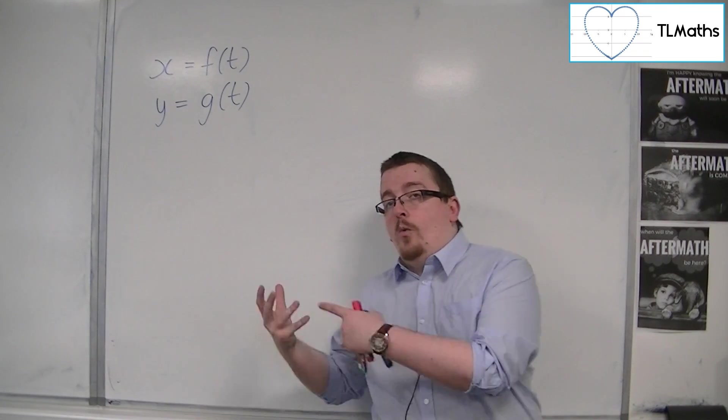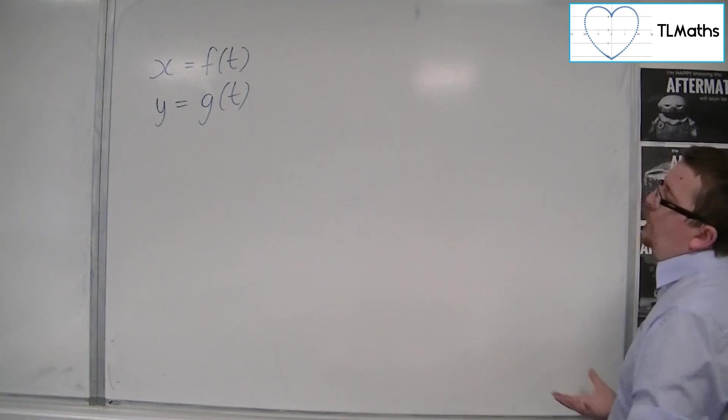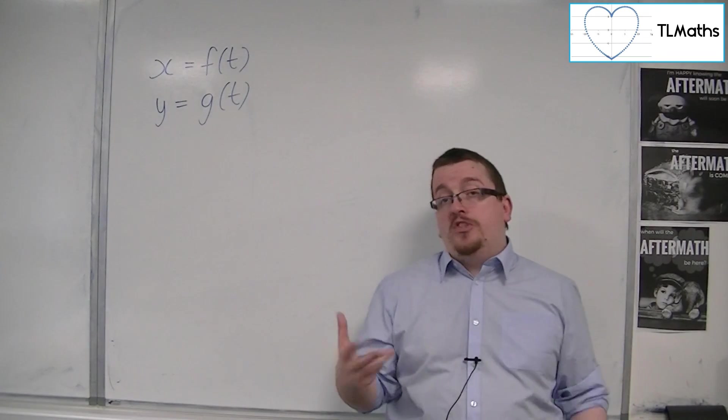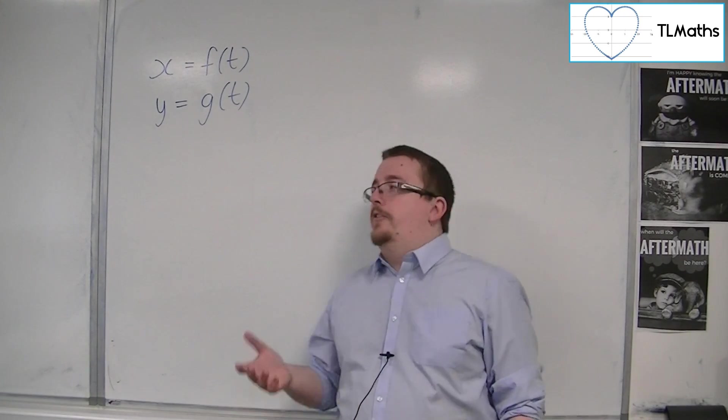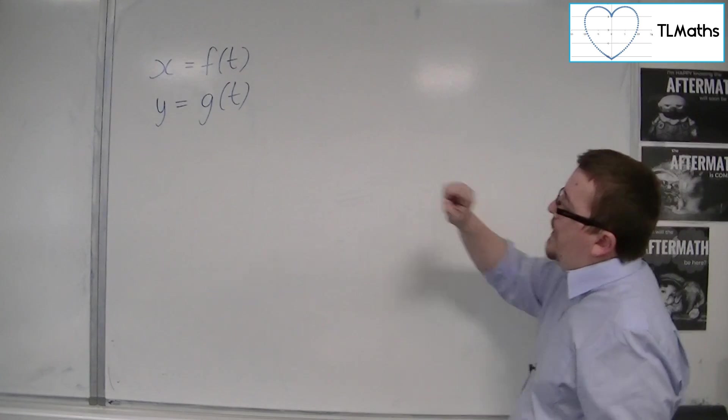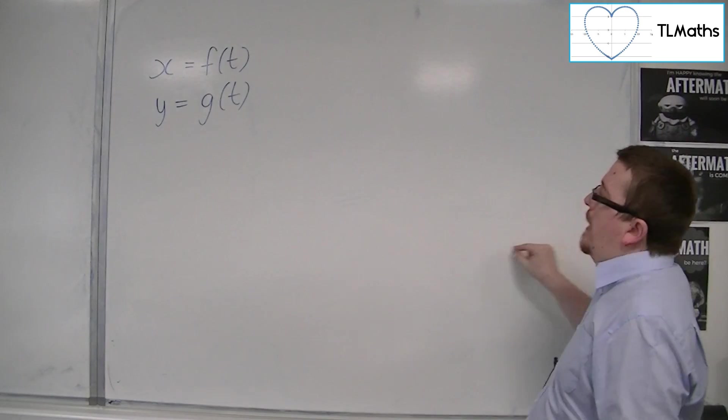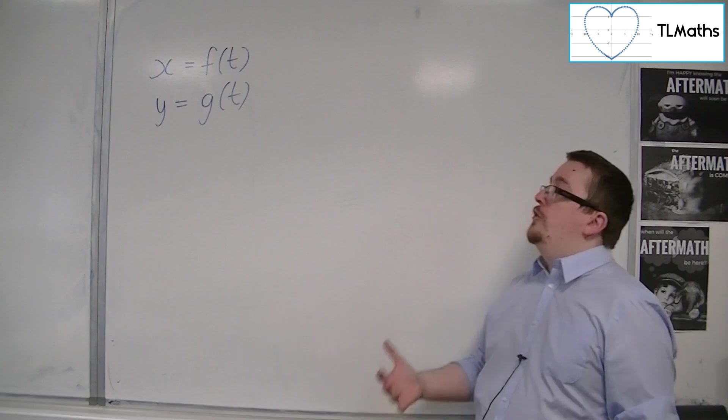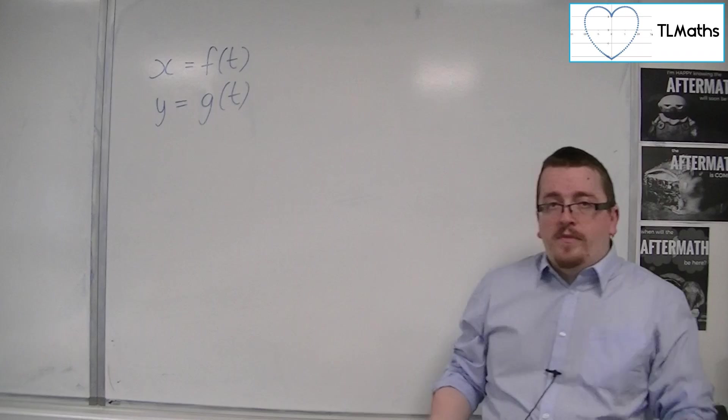And what that means is that you could relate this back to a practical problem where x is changing with respect to time, for example, and y is changing with respect to time. So it might be a particle that is flying about, and the value of x, how far along it is, and the value of y, how high it is, are both given by different functions. One given by f and one by g.